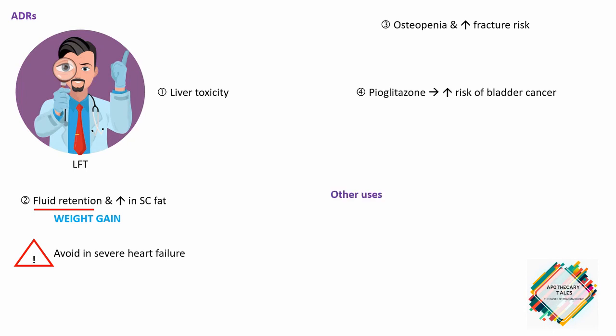Just like metformin, thiazolidinediones have other uses. The relief of insulin resistance with thiazolidinediones can cause ovulation to resume in premenopausal women with polycystic ovary syndrome. This concludes the discussion on thiazolidinediones.